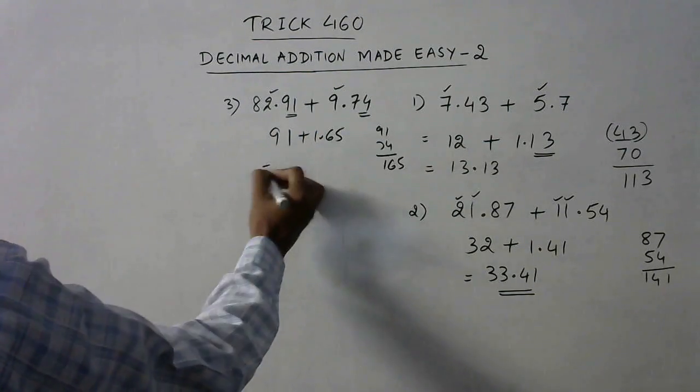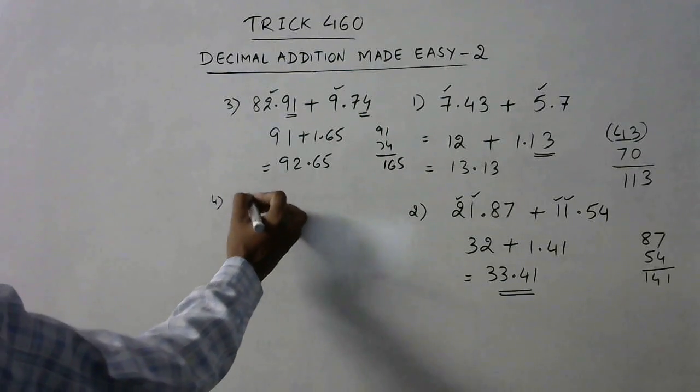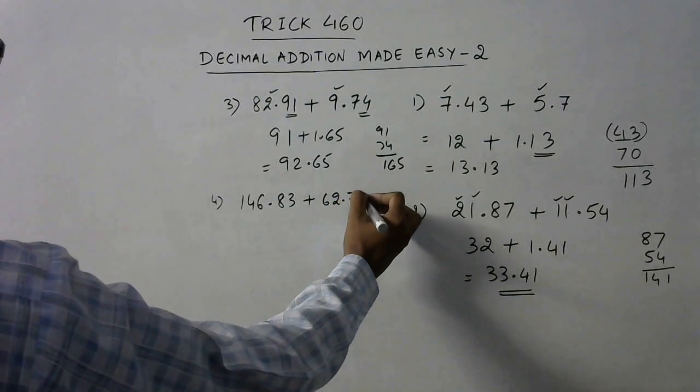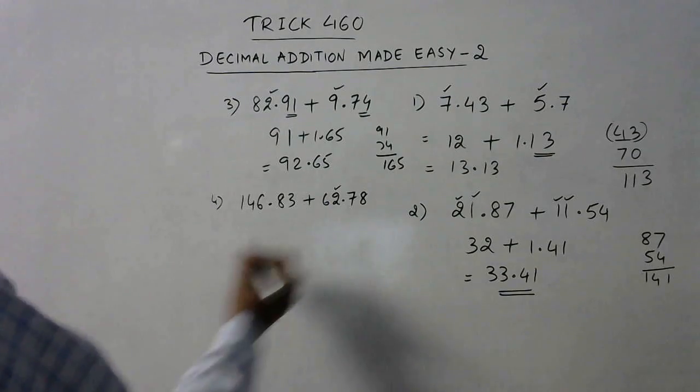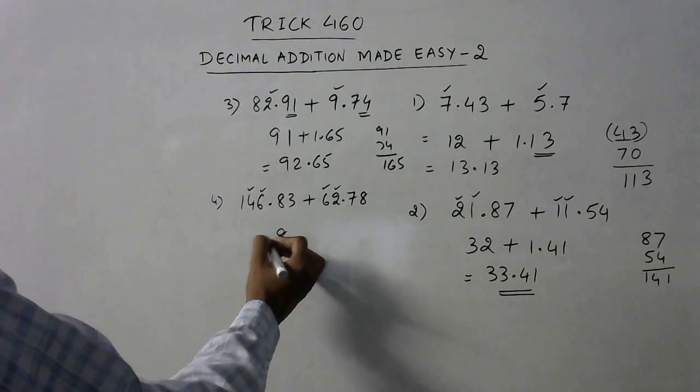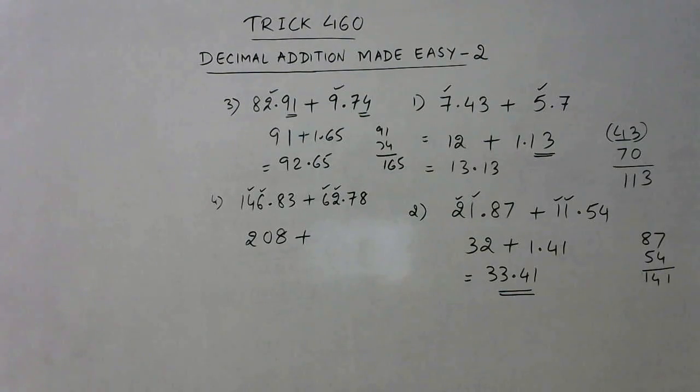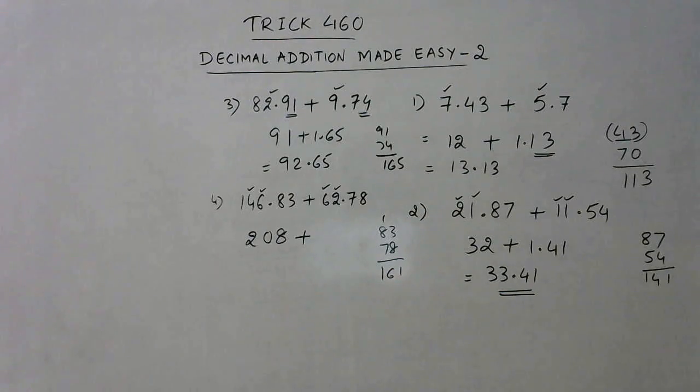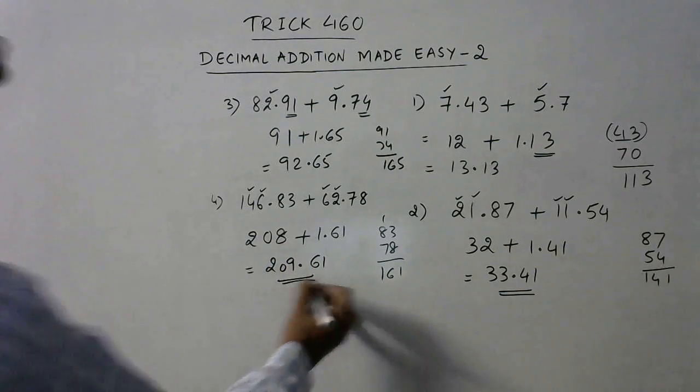More examples: say we have 146.83 added to 62.78. Now see, little bit complicated, but we can simplify it very easily. See, unit digit here 2 and 6 is 8, 6 and 4 is 10, zero, one carry. So we have only one digit left, so 1 plus 1 is 2. So before the decimal place, the sum of the numbers becomes 146 plus 62, that is 208. And now 83 and 78 to be written one below the other: 8 plus 3 is 11, and 8 plus 8 is 16, so 161, but we will write it as 1.61. Now 208 plus 1 is 209, and 0.61 will come as it is.